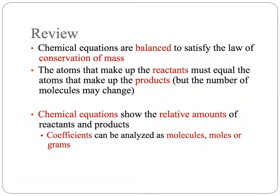Remember that we balance chemical equations because of the law of conservation of mass — that the number of atoms that make up the reactants in a chemical reaction have to equal the number of atoms that come out as the products. The reactants are on the left-hand side of the equation; the products are on the right-hand side.